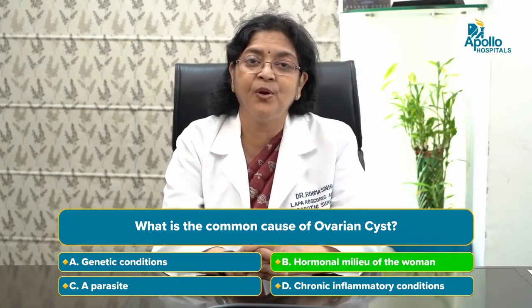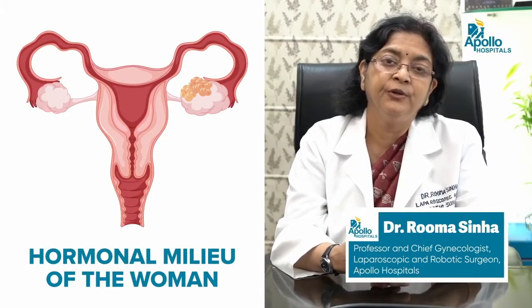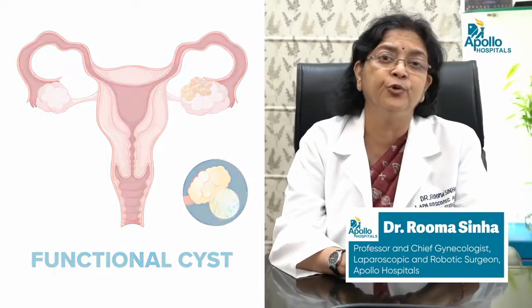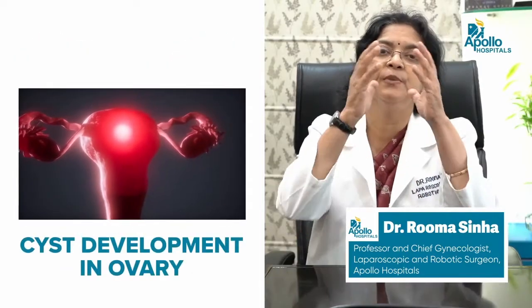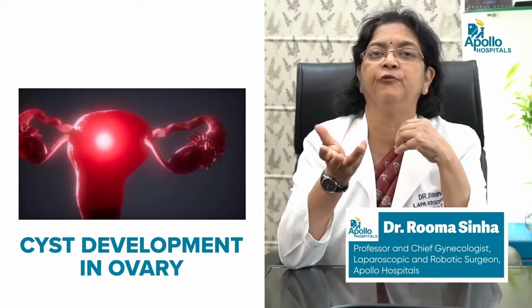Ovarian cysts can be caused by various factors. The commonest factor is the hormonal milieu of the woman. These are called follicular or functional cysts — due to abnormal follicular development caused by hormonal abnormality, the ovaries may develop cysts. A corpus luteum cyst can also develop as an after-effect of ovulation. These hormone-related cysts often disappear on their own. The other reason for cyst development is a tumor, which can be either cancerous or non-cancerous.